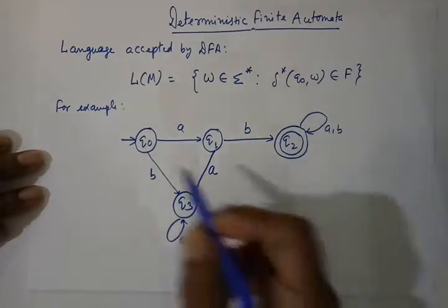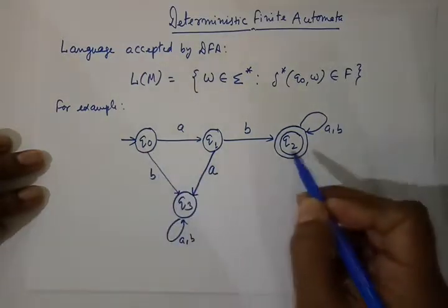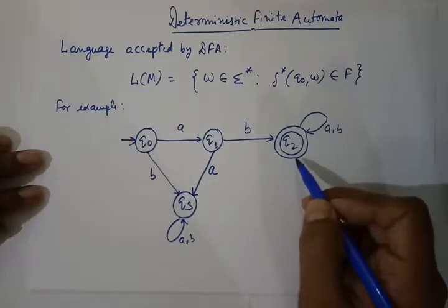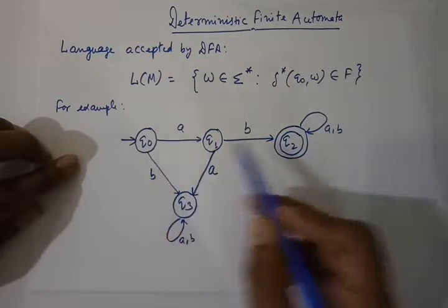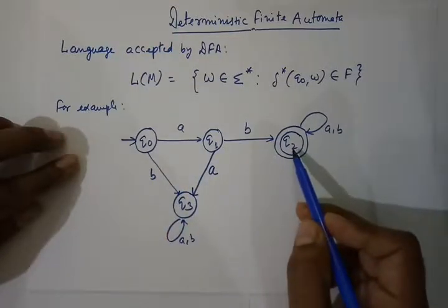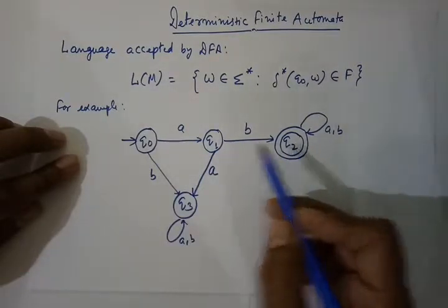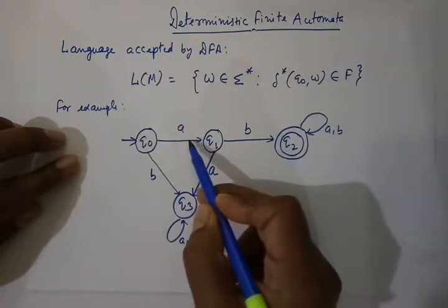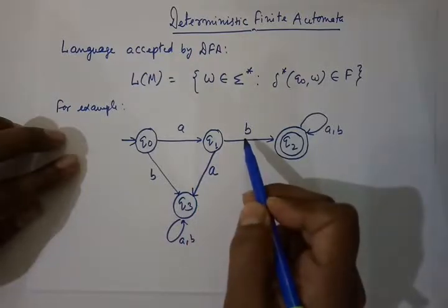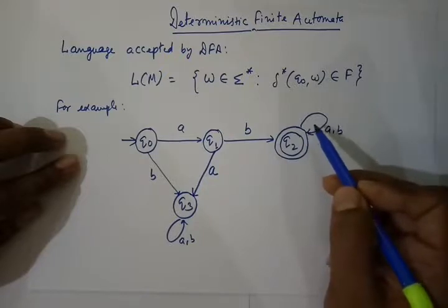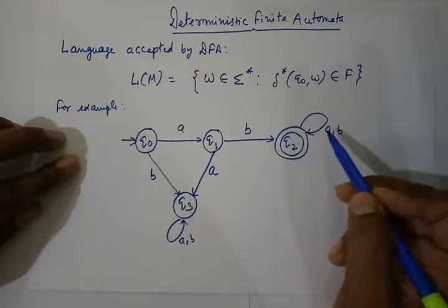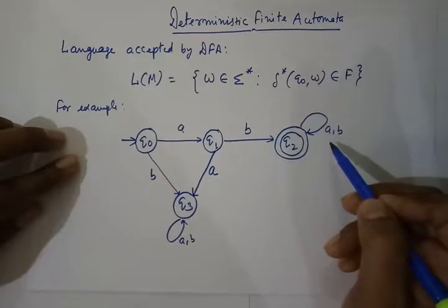Q0 is our start state and Q2 is our final state. We can notice one thing: from start state to final state, if you want to move from start state to final state, first we consume symbol A, then B.